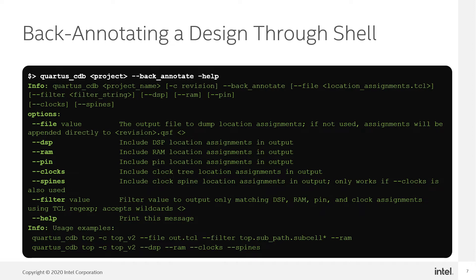From the Quartus CDB shell command, you can specify the types of resources you want to be backannotated by using their corresponding flags. Additionally, you can use the file flag and argument to specify an output file to write the assignments to instead of the project's QSF. Finally, you can use the filter flag to provide a TCL regular expression to only emit resource assignments for entities matching by name.